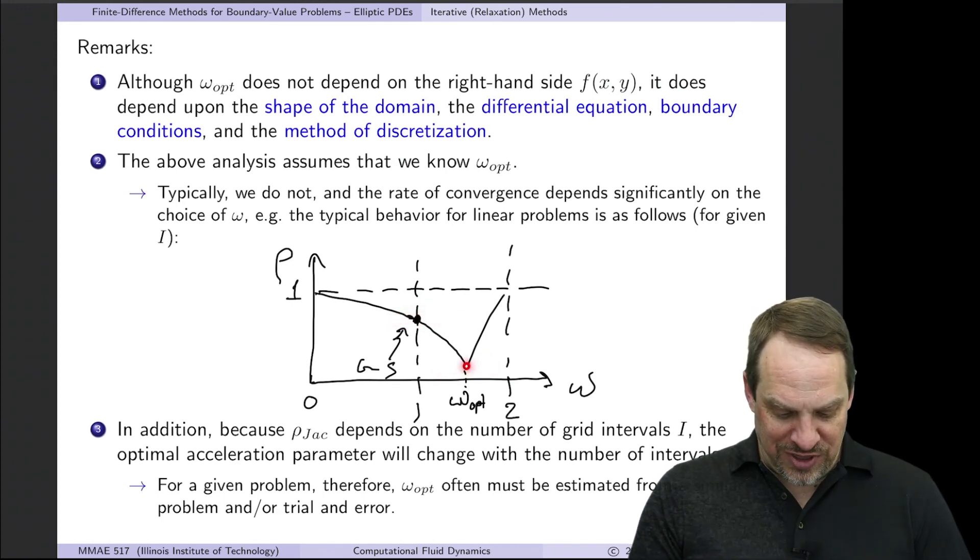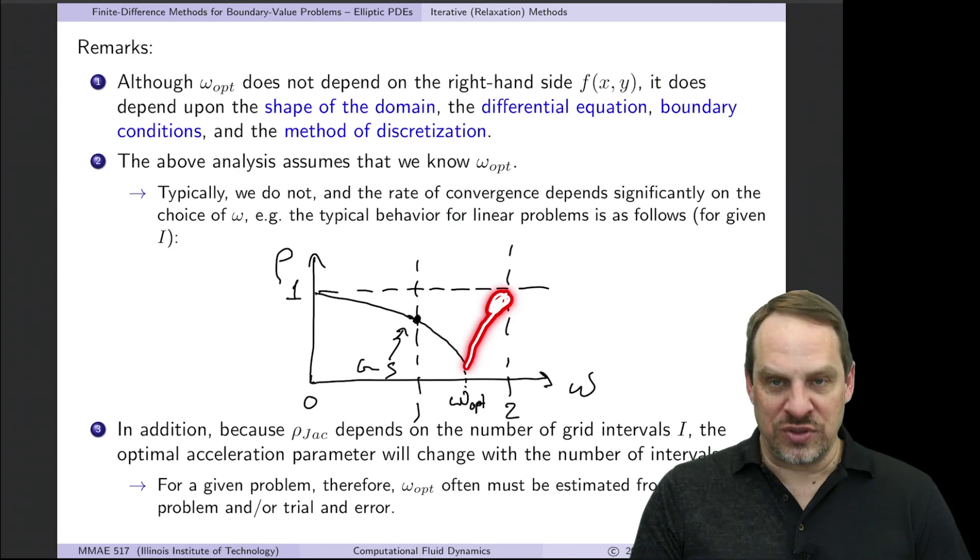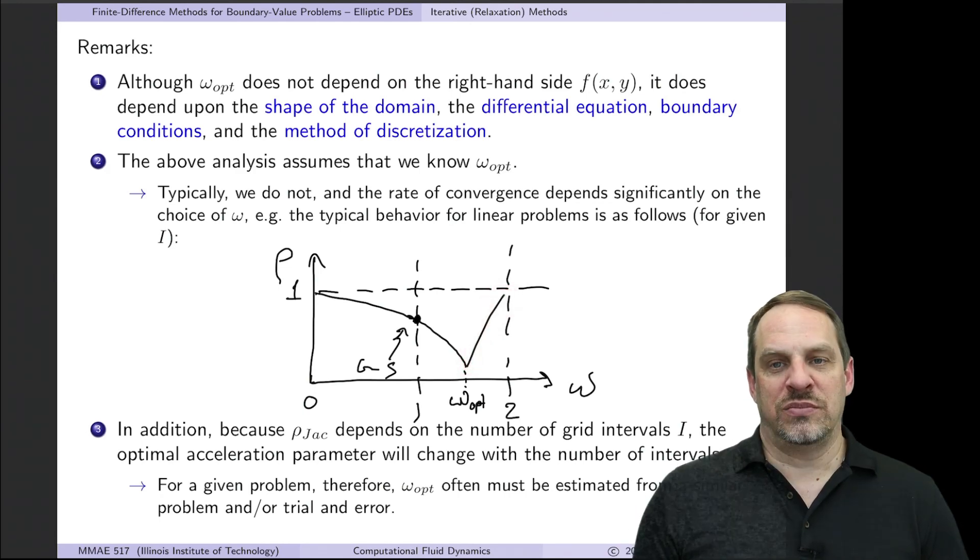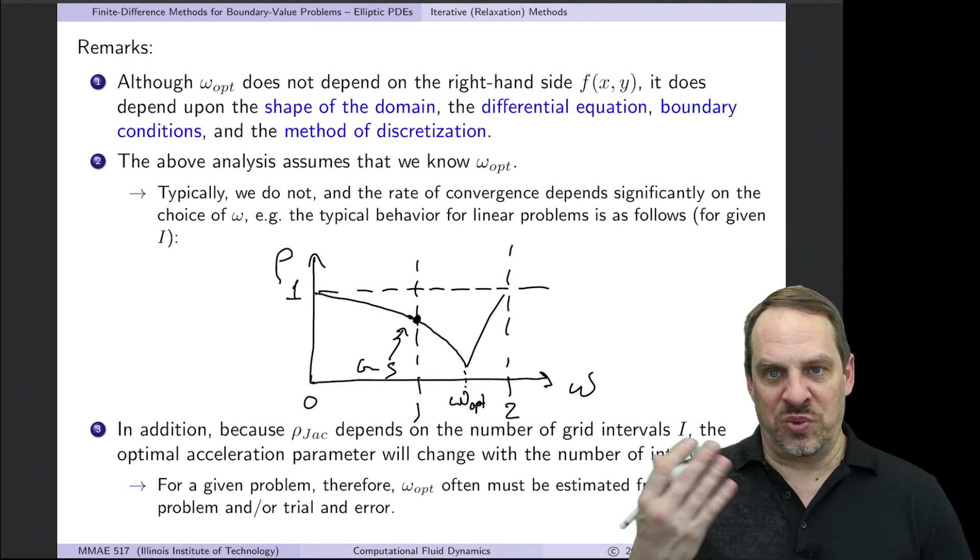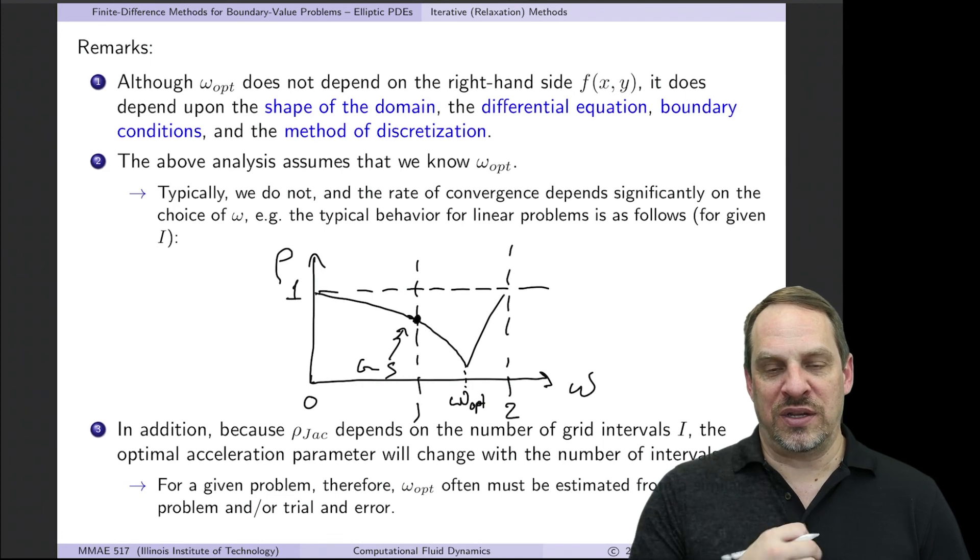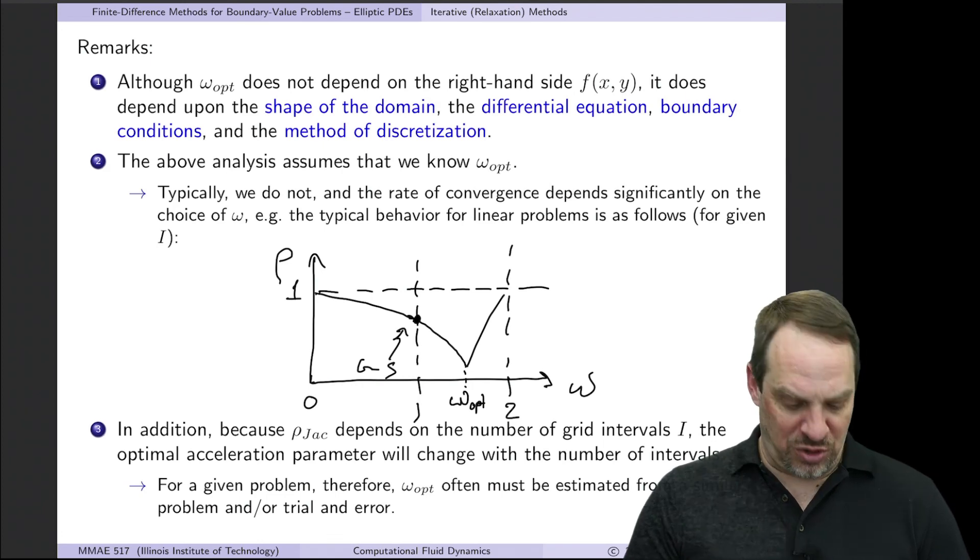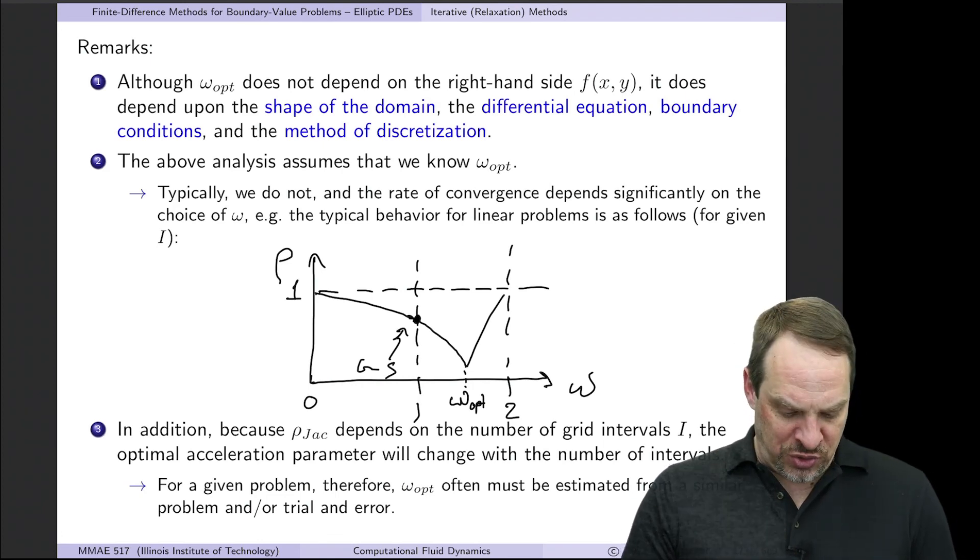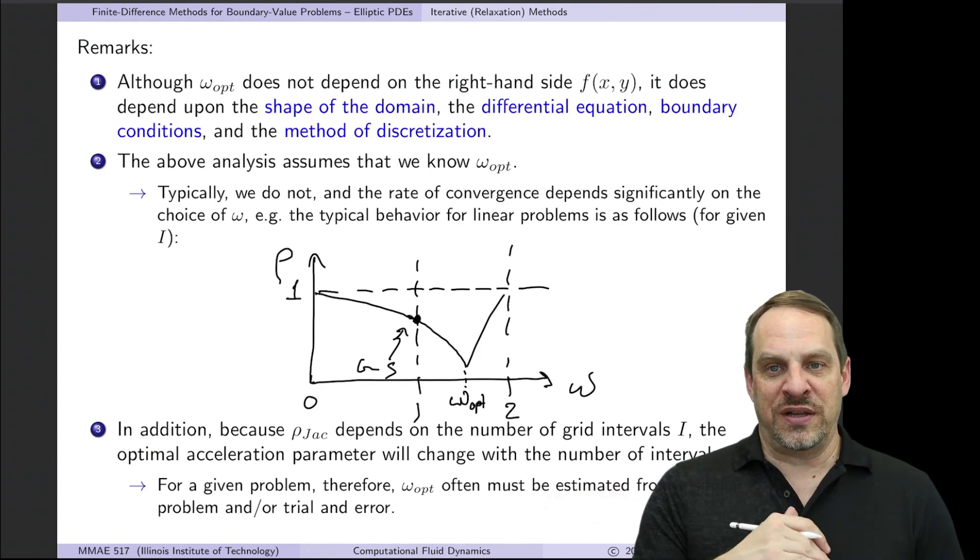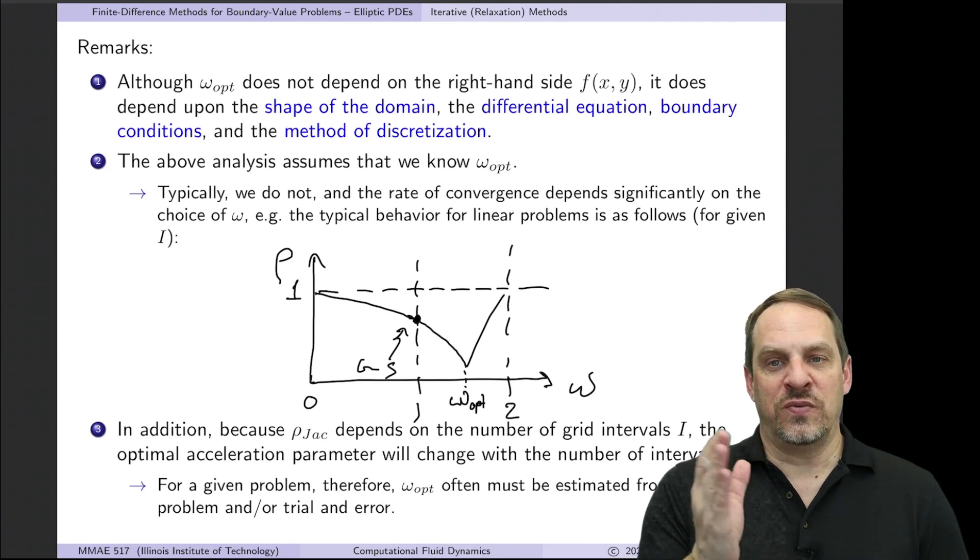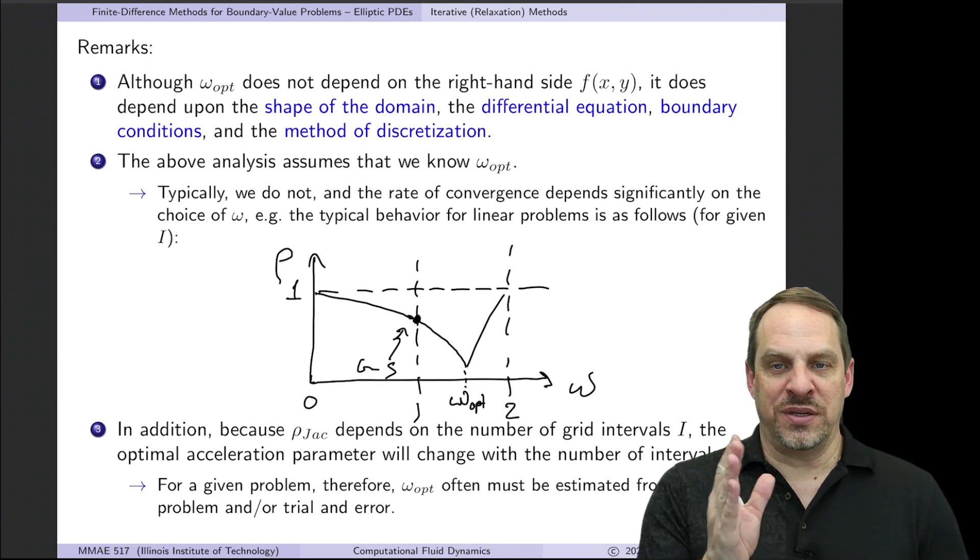But if you don't get it right on, you could actually be worse, as is the case up here. So if you have the time to determine an optimal value of omega, often through trial and error, then it's worth the time. If you're going to do a whole bunch of what we call production runs with that given omega for a particular problem. Now the other thing you can do is use an estimated value from a similar problem. So maybe your problem isn't exactly the same as this model problem, but you can use this at least as a starting point for searching where the optimal omega is.